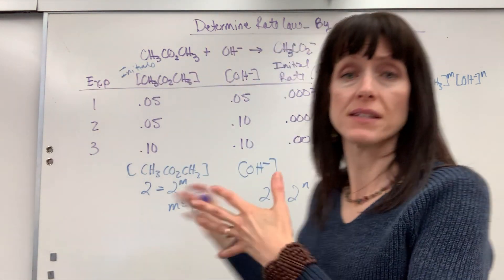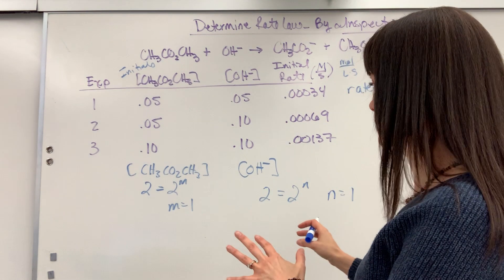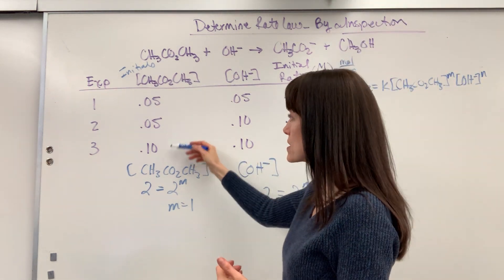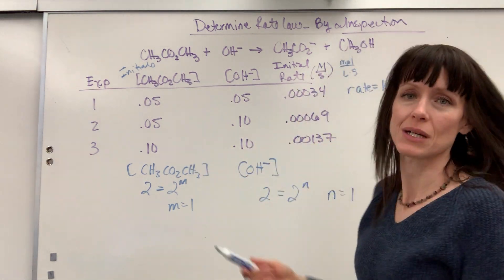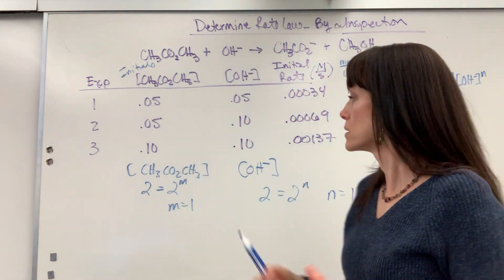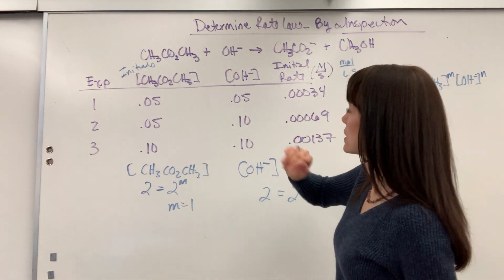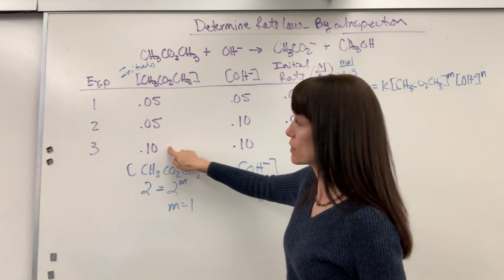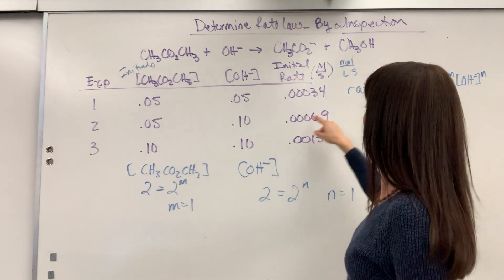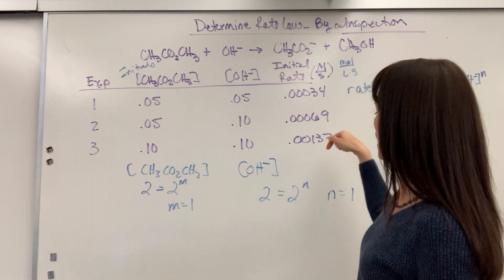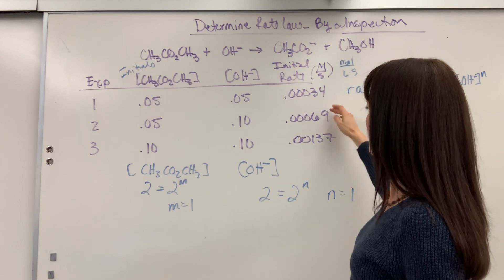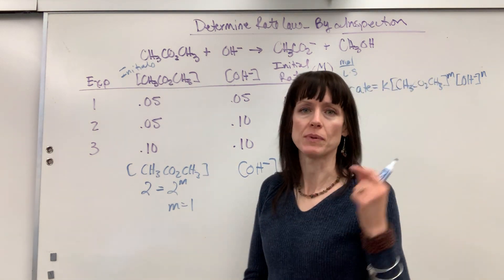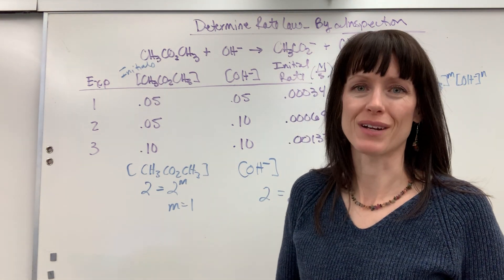Now, what I've written down there, that's enough that I will give credit to my students. I can see that they understand the principle of doubling concentration, doubling the rate. Or if they wrote out words: when hydroxide is held constant, the concentration of methyl acetate is doubled, therefore the initial rate of the reaction doubles and must be first order. I will give them credit for that as well.